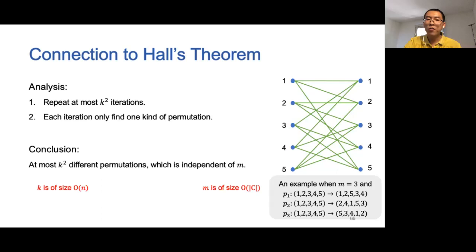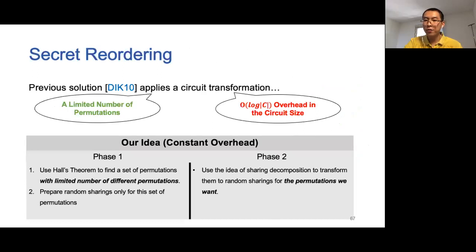Recall that K is the number of secrets packed in a single sharing, which is O(N), and m is the total number of permutations we need to perform, which is O(C). Together with sharing decomposition, we can efficiently prepare random sharings for any permutations. In summary, our idea works as follows: in phase 1, we use Hall's Marriage theorem to find a set of permutations with a limited number of different permutations and prepare random sharings only for this set. Then in phase 2, we use sharing decomposition to transform these random sharings to those for the permutations we want.